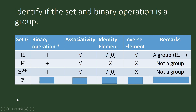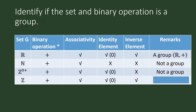How about the set of integers under the operation of addition? Addition is associative. We have the identity element zero. And for every integer, we can find its inverse — which is also an integer — in the set of integers. Therefore, the set of integers under the operation of addition is a group.